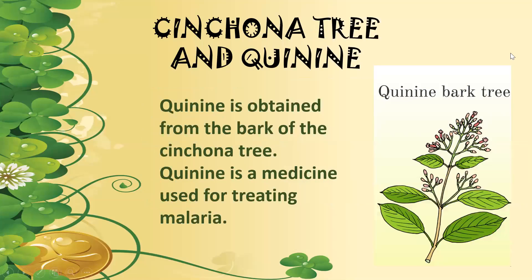Then we have the cinchona tree and quinine. Quinine is a chemical obtained from the bark of the cinchona tree. We obtain quinine from the bark of the tree, and quinine is a medicine used for treating malaria. Malaria is a disease, and to treat it or get rid of it, quinine is used — obtained from the bark of the cinchona tree.